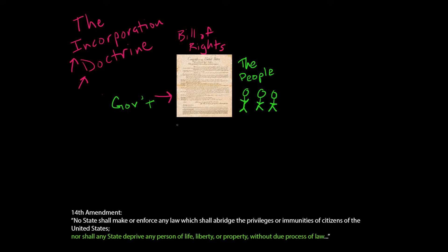It's actually the first eight amendments that provide protections. The Ninth and Tenth Amendments are part of the Bill of Rights, but they don't have protections from the government — they do other things. Originally, the Bill of Rights only protected us from the national government. We have a federal system of government with a powerful national government, and also a number of state governments with real authority, and that authority might end up restricting our liberty.